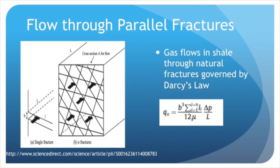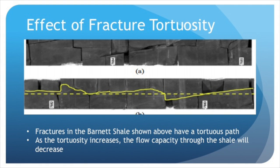Flow through fractures is difficult to analyze due to the extremely small size of the pores. Theoretical models for permeability have been developed, but due to several distinct characteristics of gas shales, they are not applicable. These characteristics include irregular fracture networks, poor connectivity of fracture networks, and fractures that may be filled with minerals. An ideal situation is flow through parallel fractures, governed by Darcy's law and Poiseuille's equation for flow. Due to irregular geometry, the flow path of natural fractures in shale is often tortuous. The capacity for flow will decrease as the fractures become more tortuous, so to estimate permeability in gas shales, tortuosity must be accounted for.